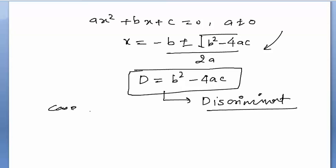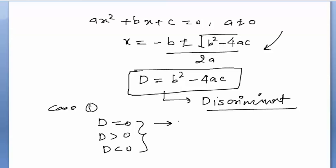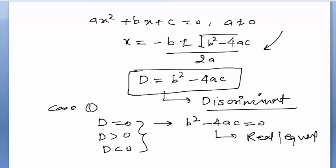There are three cases depending on the value of D. Case one: if D equals 0, meaning b² − 4ac = 0, the roots are real and equal. Case two: if D is greater than 0, meaning b² − 4ac > 0, the roots are real but not equal.